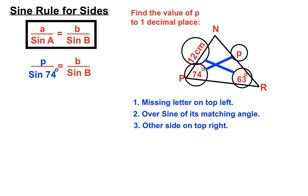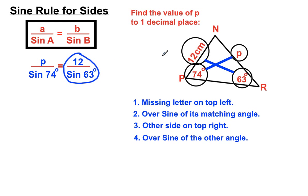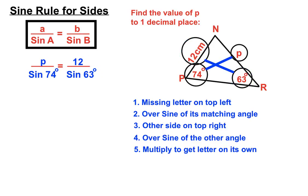Then we have the other side on top — the other side is 12 — so we put 12 up the top, over the sine of the other angle we haven't used yet, which is 63. On the right-hand side of our substituted formula, we are dealing with this side and the sine of its related angle. To find the value of P, we need to get the P pronumeral on its own. We'll need to move the sine 74 degrees, which is on the bottom of the fraction dividing into the top.